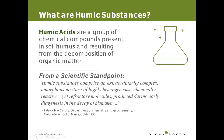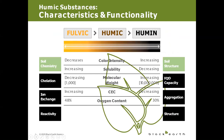Humic substances can be broken down into three categories, but all are important components of humus. Inside humic substances are three categories of humates: fulvic acid, which you might have heard of; humic acid, which you likely have heard of; and humin, which you may or may not have. But all three of those make up humic substances.